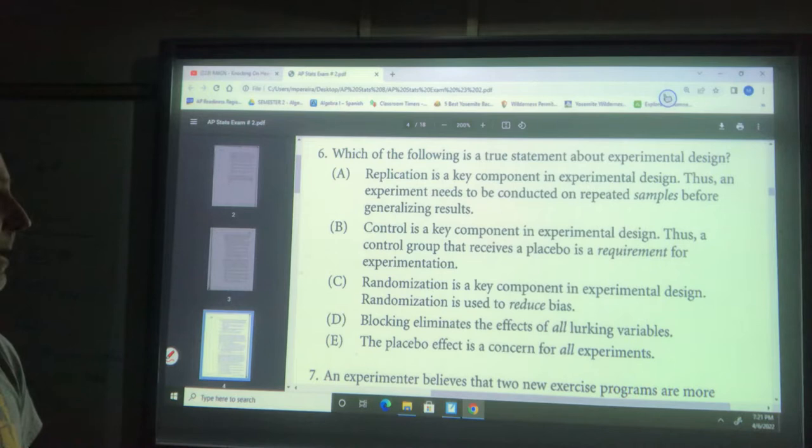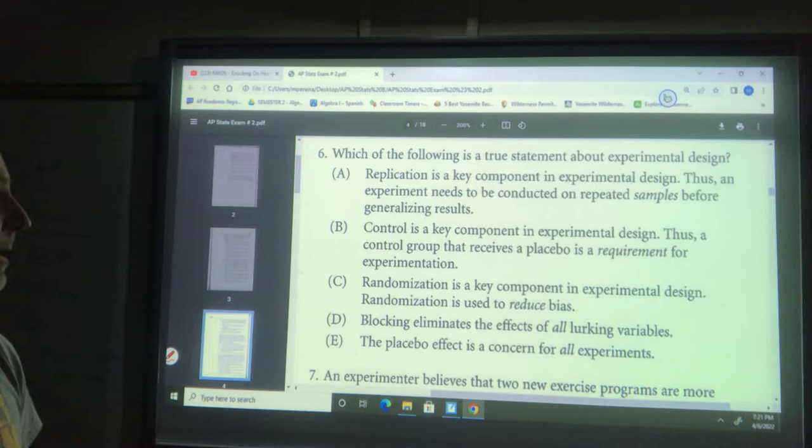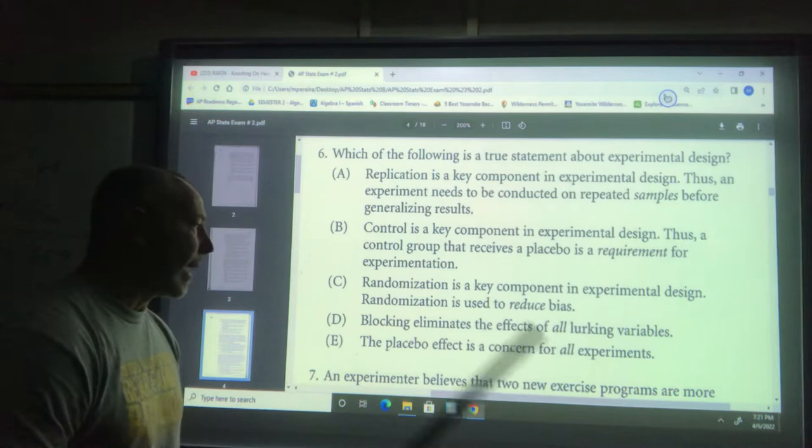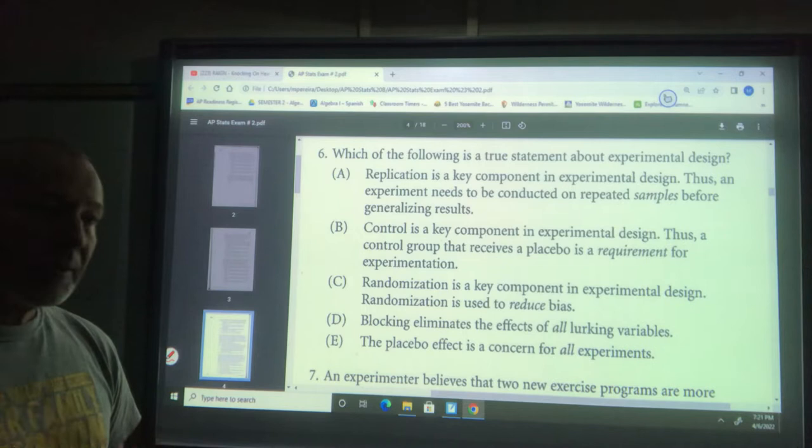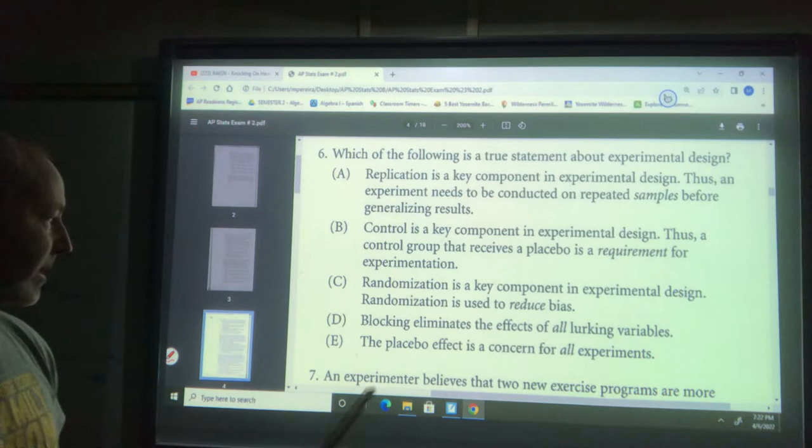Randomization is a key component to experimental design. It is used to reduce bias - that's a true statement. We're randomizing our people and applying different treatments to groups, hoping that lurking variables are dispersed throughout so they have the least effect on our experiment.